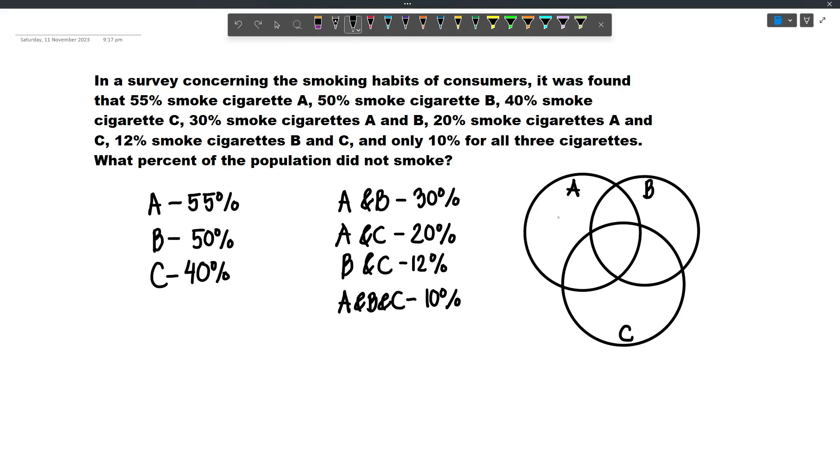Now we have to start listing first those who smoke A, B and C because that will be at the center. Now 10% smokes all 3 cigarettes, and so let's write that here.